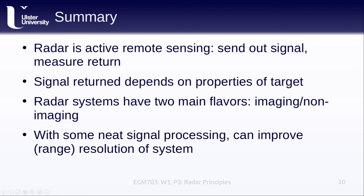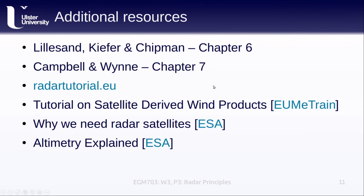You can read more about the topics we've discussed here in the textbooks, Lillisand, Kiefer, and Chipman in Chapter 6, or Campbell and Wynn in Chapter 7. This website RadarTutorial.eu has a number of good explanations and visualizations for some of the concepts that we've covered here and also provides a lot more information about the different systems that we might see. For more information on how we can measure surface wind speed from space, this page from EU MetTrain is worth a look. And finally I've included links to two videos made by ESA that explain why radar satellites are so important and also how radar altimeters are used.